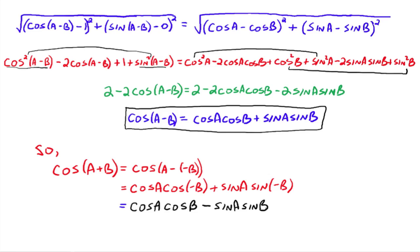Don't let all the A's and B's freak you out. Really all this is saying is: the cosine of two angles added together equals the cosine of the first angle times the cosine of the second angle, minus sine of the first angle times sine of the second angle.